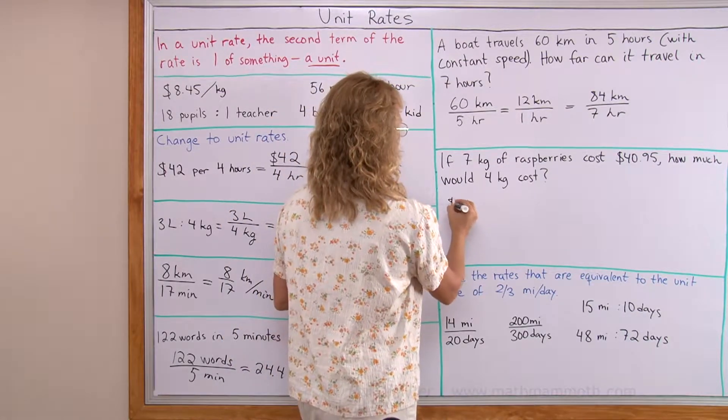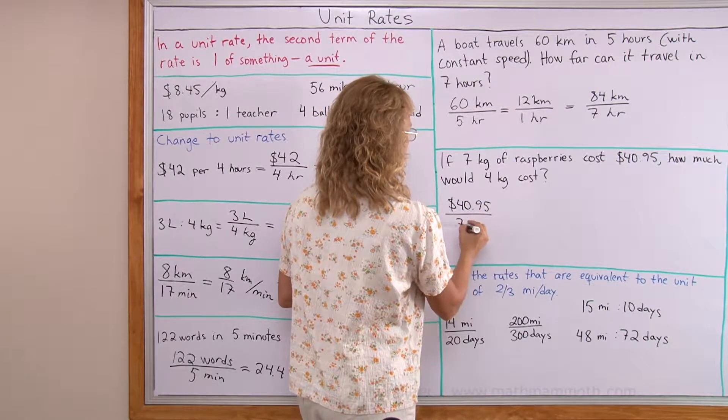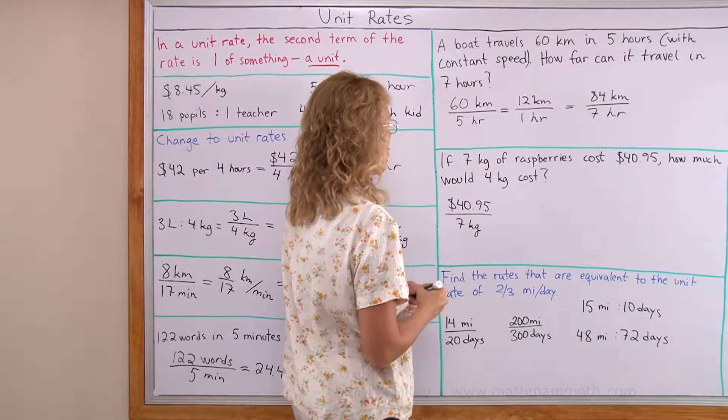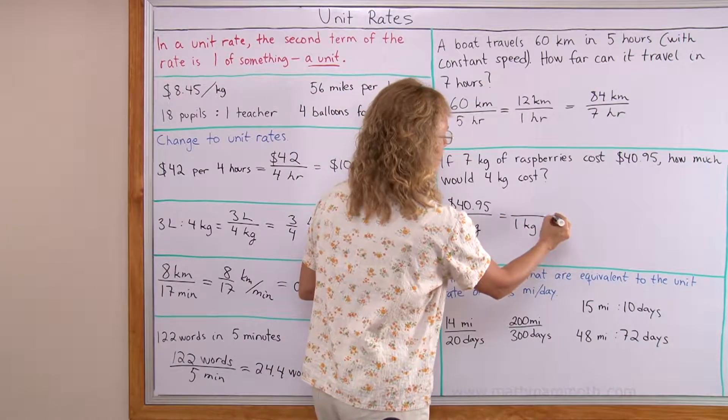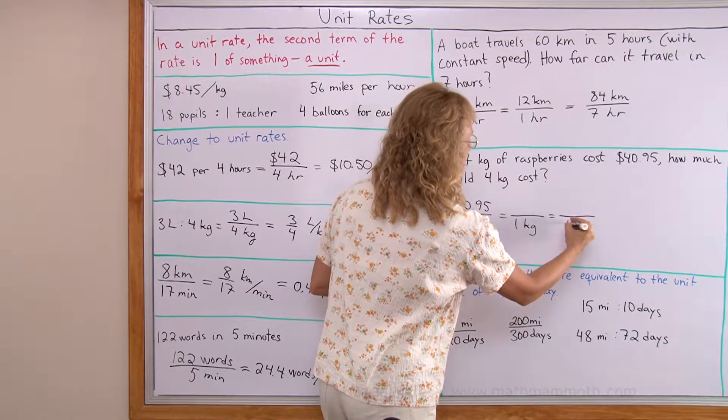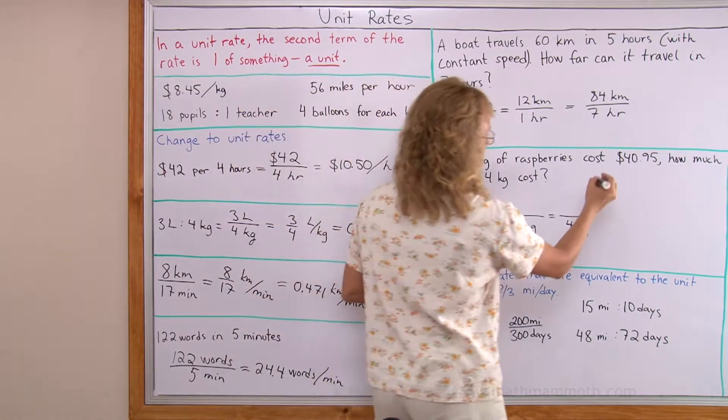So the rate here given is $40.95 per 7 kg. And we want to find, first of all, the unit rate. How much per 1 kg. And then after that we will find the price for 4 kg.